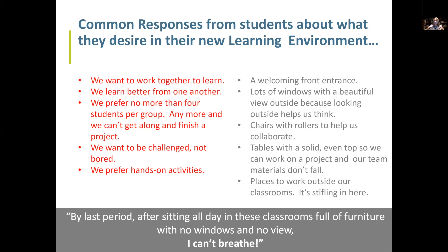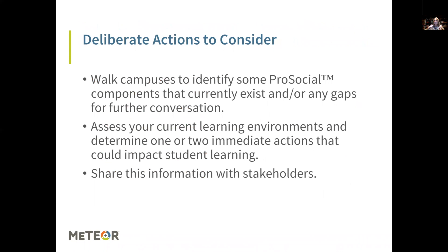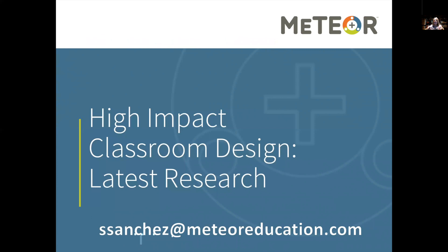As we conclude, I want to leave you with three deliberate actions to consider. Walk your campus to identify pro-social components that currently exist or any gaps you might have so you can have further conversations with key stakeholders. Assess your current learning environments and determine one or two immediate actions that could impact student learning. Or share this information with stakeholders and have an internal conversation — talk about the research, where your students are, what they want, what are their needs, and how they best learn. Hopefully this has given you some food for thought. If you have any questions, go ahead and type them into the Q&A box.